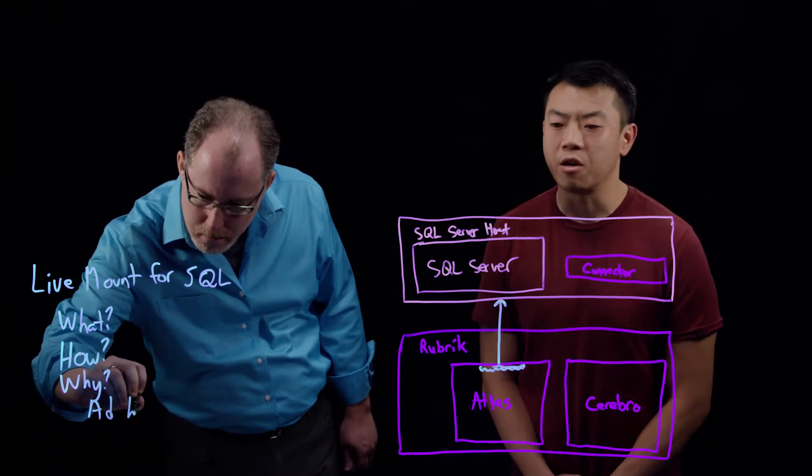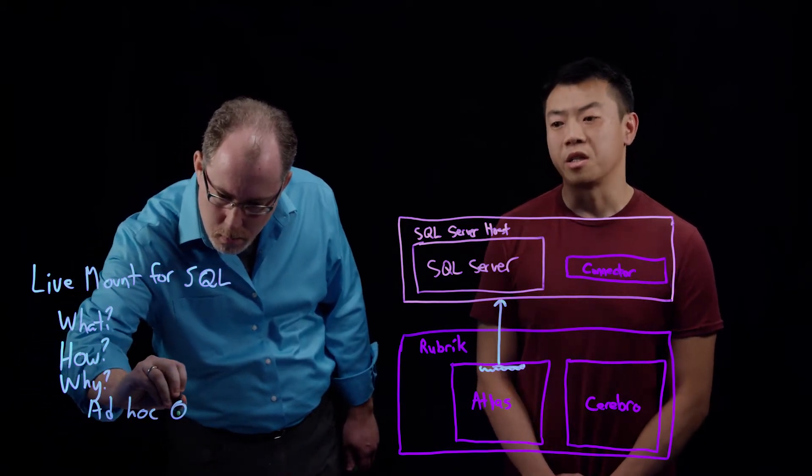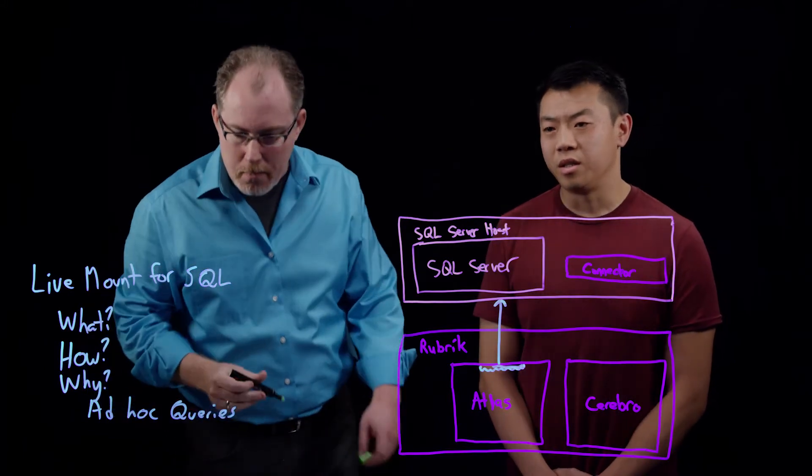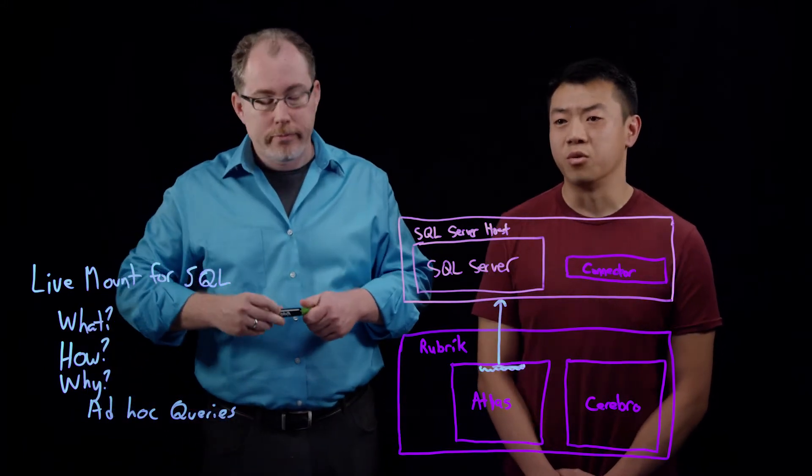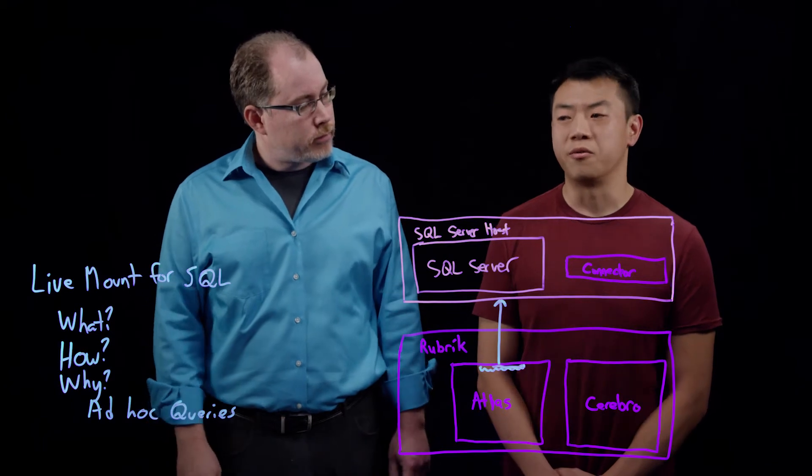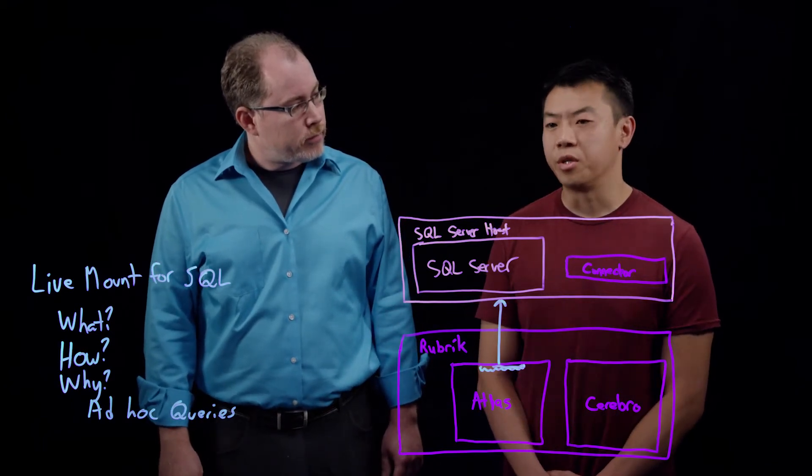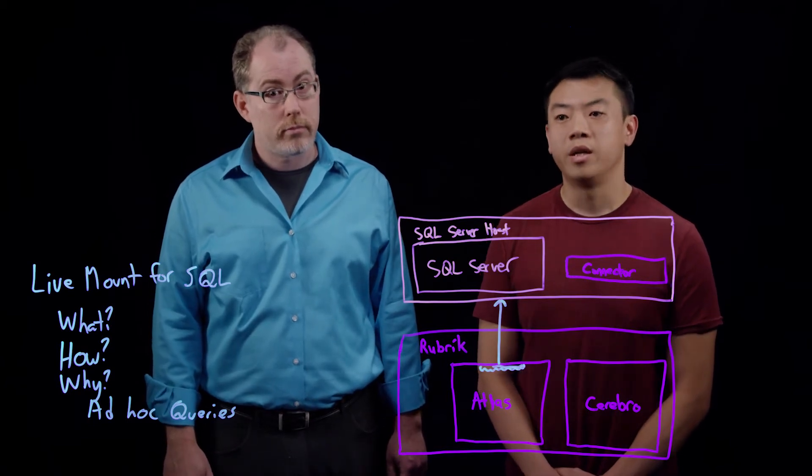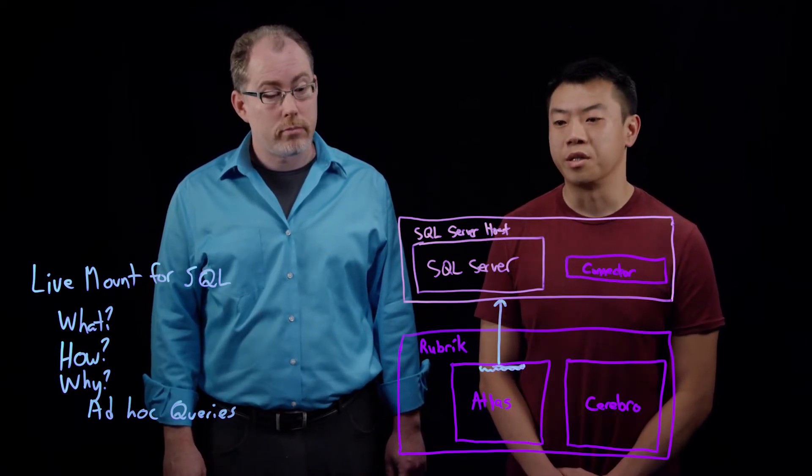Sure. So one such ad hoc query would be a use case like selective restore. Suppose just a few rows of the database are corrupt. It doesn't really make sense to wait for a full restore in order to recover just those few rows. So with our live mount feature, you can instead run an ad hoc query just to get the few rows that need to be recovered and export those back into the production database.